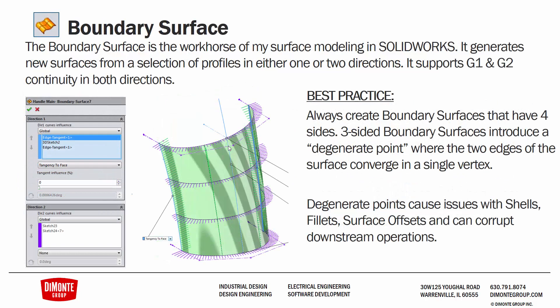The boundary surface is the workhorse of surface modeling in my SolidWorks workflow. It generates new surfaces from a selection of profiles in either one or two directions. It supports both G1 tangency and G2 equal curvature continuity in both directions. The best practice is always to create boundary surfaces that have four sides, because three-sided boundary surfaces can introduce a degenerate point, which can cause issues with filleting and especially with shell.